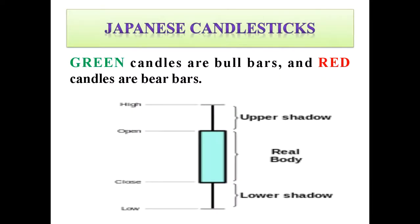Here is a Japanese candlestick. Green candles are bull bars and red candles are bear bars. The parts are: real body, upper shadow, lower shadow, high region, low region, open end, and close end. Here is a diagram.